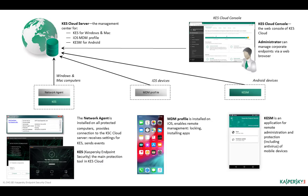Globally, Kaspersky Endpoint Security Cloud has five components. First, Kaspersky Endpoint Security Cloud server is a place where all information about protected endpoints is stored. It is the command center through which the administrator can manage protection. All protected endpoints are connected to Kaspersky Endpoint Security Cloud server one way or another and periodically synchronize with it.